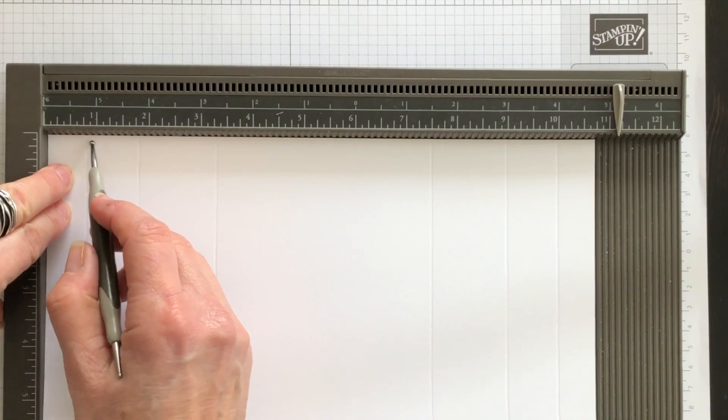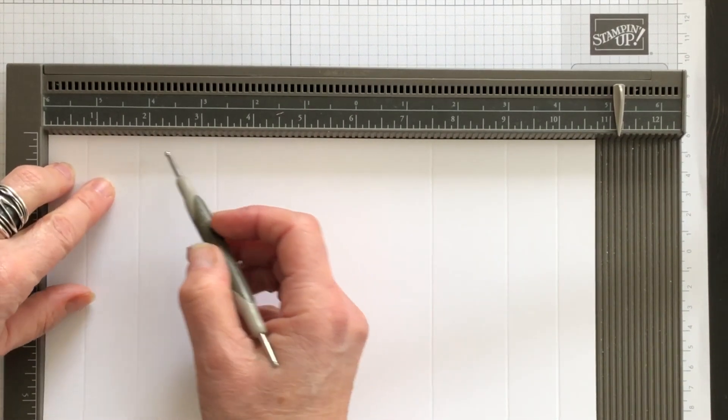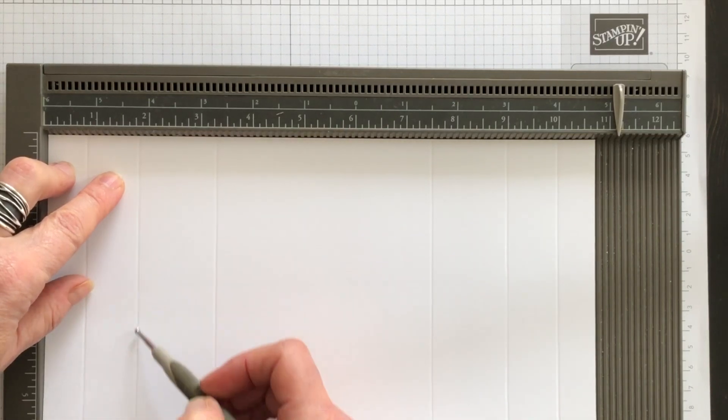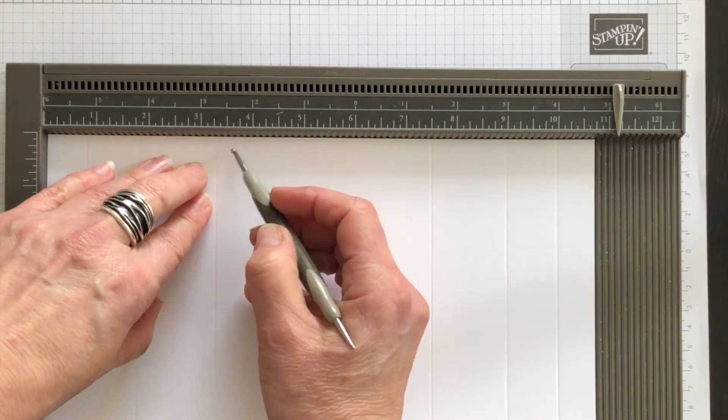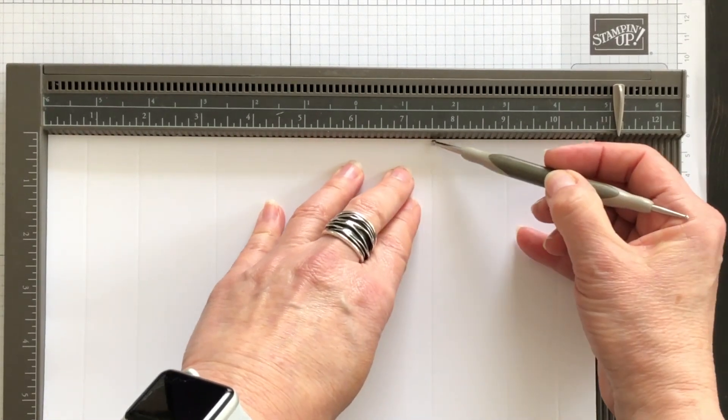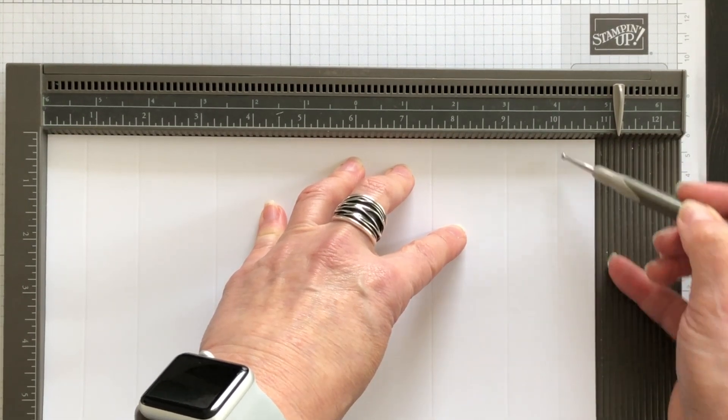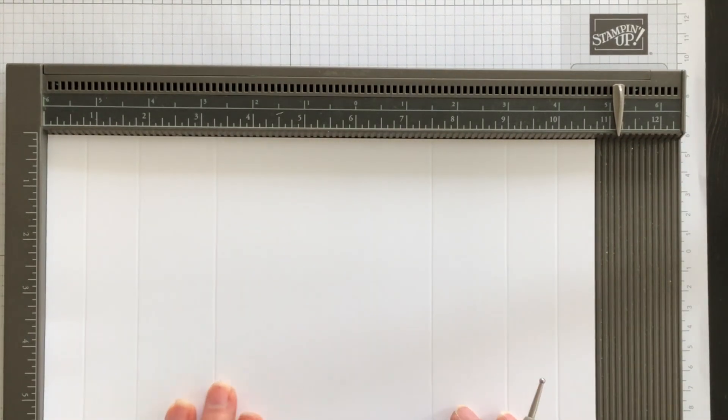The first score line is at three quarters of an inch. Then your second one is one and three quarters. Your third one is three and a quarter. Then we have seven and a half, nine, and ten. And of course, these are all in inches.